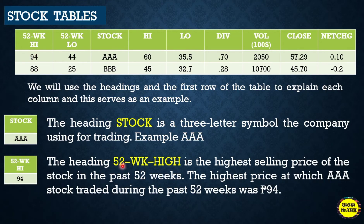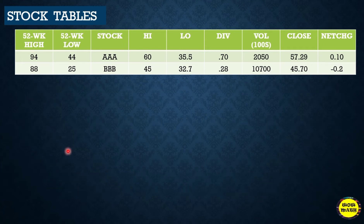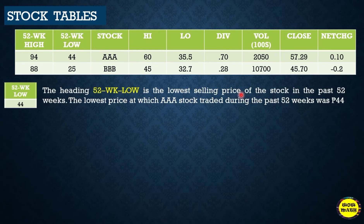The heading '52 Week High' is the highest selling price of the stock in the past 52 weeks. For example, the highest price at which AAA stock traded during the past 52 weeks was 94 pesos. The heading '52 Week Low' is the lowest selling price in the past 52 weeks — for AAA, that was 44 pesos.